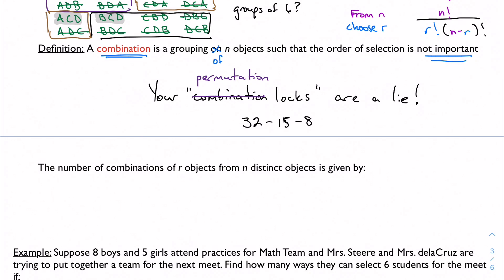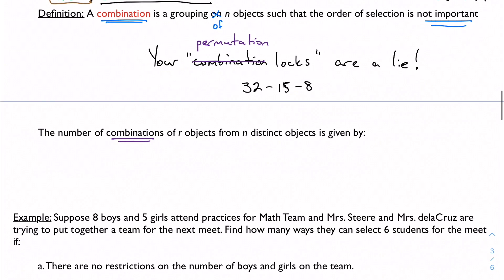And this is a universal truth that has been stated by math teachers for centuries, is that your combination locks are not really combination locks in a mathematical sense. So the number of combinations of R objects from N distinct objects is given by the formula NCR, C for combination, equals N factorial over R factorial times N minus R factorial. This diagonal notation is a pretty IB specific thing. Some books will write them both as subscripts like this. This seems to be a pretty typical US thing. This is very much an IB thing.